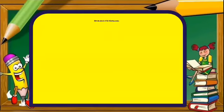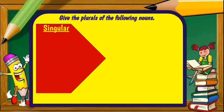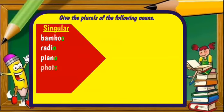Let's get some more examples. Now give the plurals of the following nouns — these are the exceptions. The singular nouns are: bamboo, radio, piano, photo, halo, and kangaroo. These words all end with O and are exceptions to the rule.